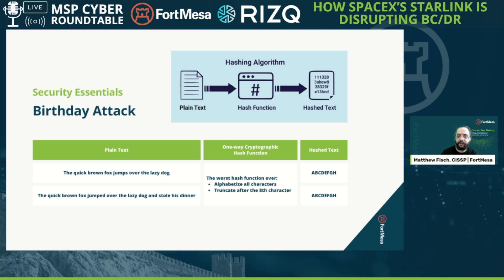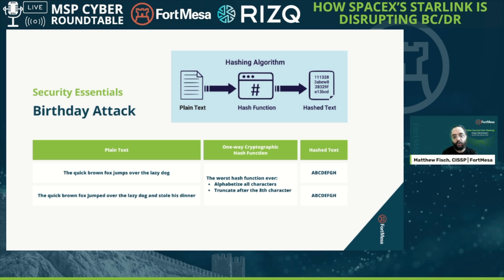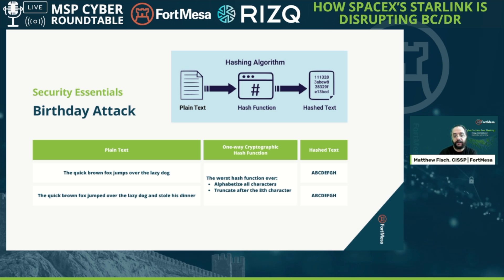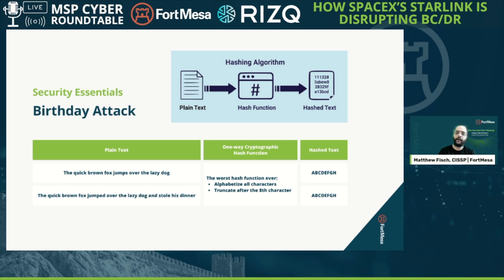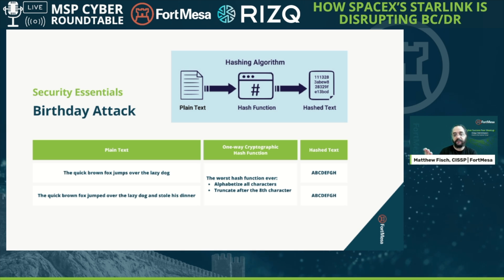Before we jump into birthday attacks, let's just talk about hashing algorithms real quick. Many of you have probably heard of a hashing algorithm or a cryptographic hash — sometimes called a one-way function or one-way cryptography. What we're talking about is a piece of code that plain text, or unencrypted data — it's not always text — goes into, and what comes out the other side is a hash that you can use to uniquely validate that the data is as you expect.